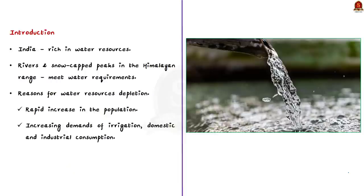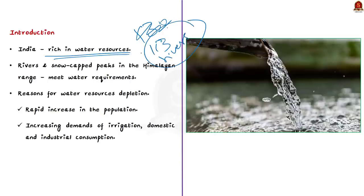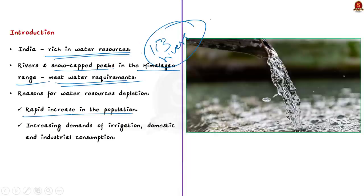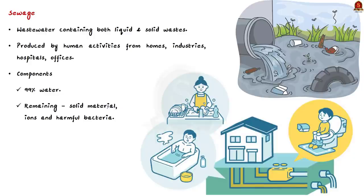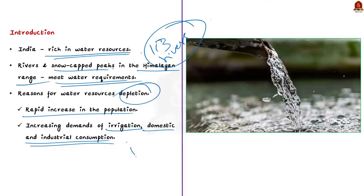India is rich in water resources, having a network of as many as 113 rivers and vast alluvial basins to hold plenty of groundwater. India is also blessed with snow-capped peaks in the Himalayan range. However, with rapid increase in population and increasing demands of irrigation, domestic and industrial consumption, available water resources are getting depleted and water quality has deteriorated. In India, water pollution comes from three main sources: domestic and industrial sewage, chemical effluents, and runoff from agriculture.